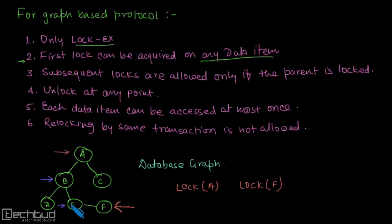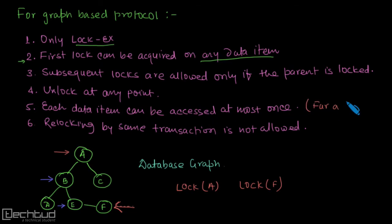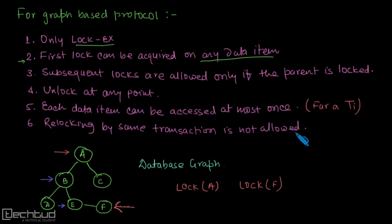In order to acquire two locks we may have to acquire some extra locks as well. The fourth rule is that we can unlock a data item at any point — it's simple. The fifth rule is that each data item can be accessed at most once per transaction, meaning once a lock is released it cannot be locked again. That's why the sixth rule states that relocking by the same transaction is not allowed.